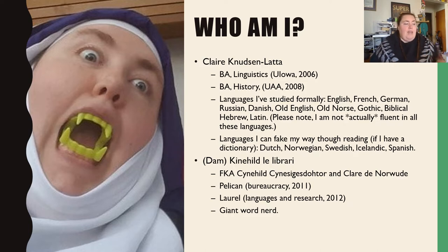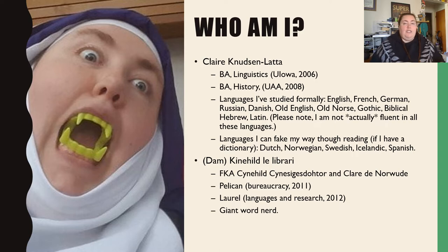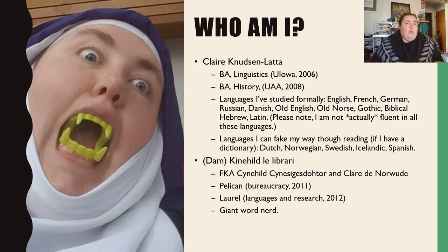In the SCA, I'm Dam Canehilde Library, formerly known as Canehilde Kunisigestochter — only it turns out the number of people who can pronounce that is like three. So I figured I would ease things up and change my name to Canehilde Library, which also gives me the great joy of getting to be the library. Clare de Norwood was my first registered name. I received my Pelican in 2011, essentially for being a giant bureaucrat, and my Laurel in 2012 for my interest, enthusiasm, and knowledge about languages and research, especially early Germanic languages. I'm also a giant word nerd, and I live in the Principality of Awurtha, which is in the Kingdom of the West.